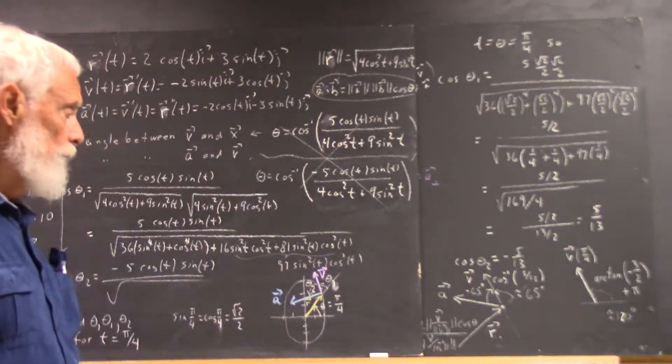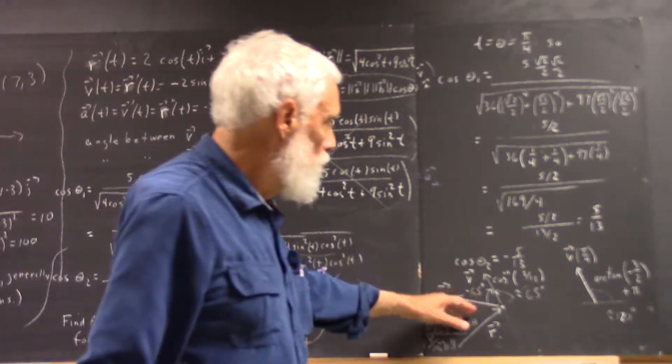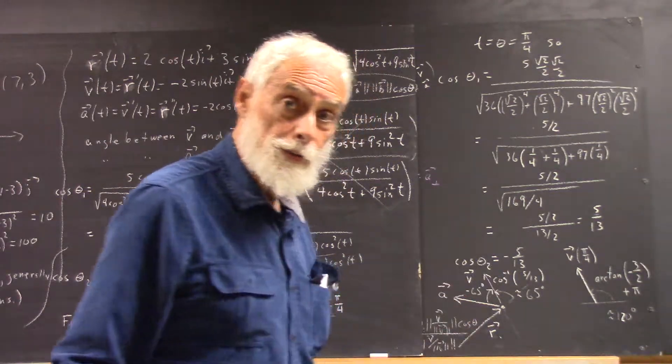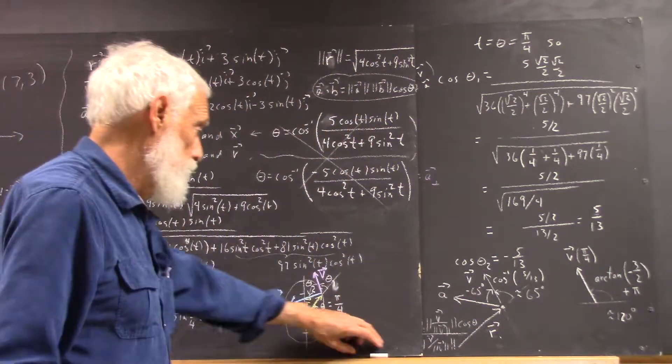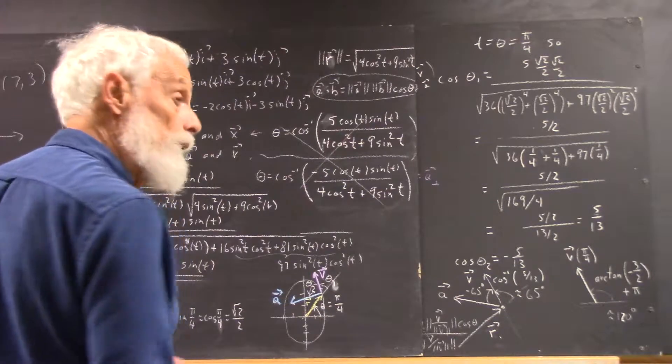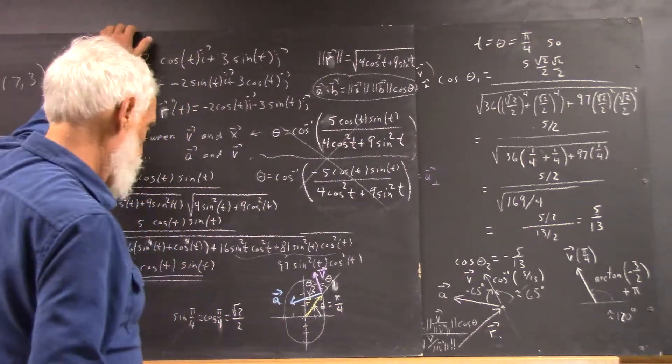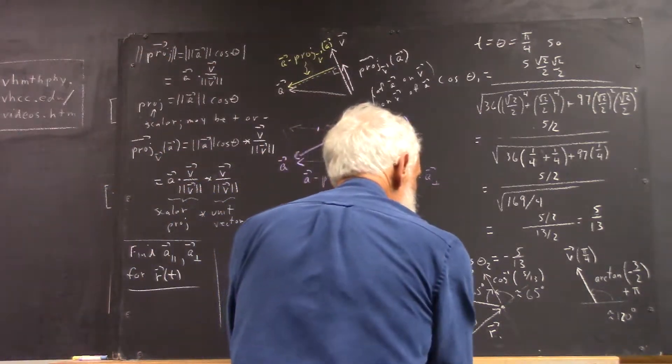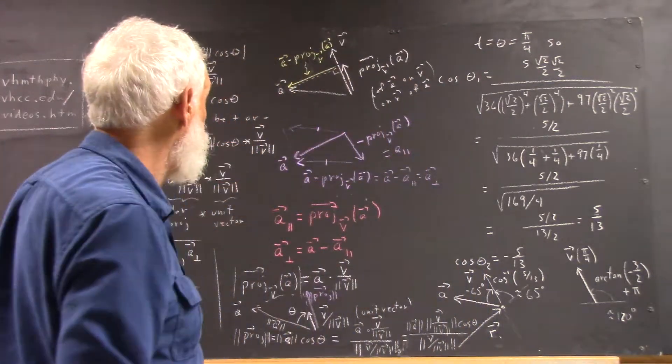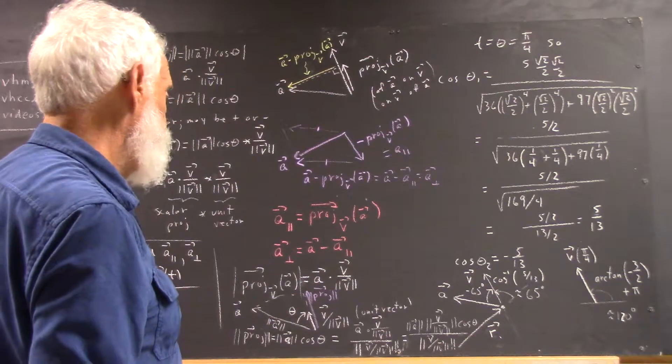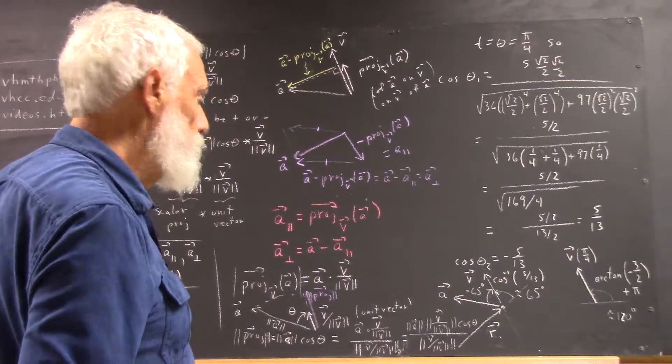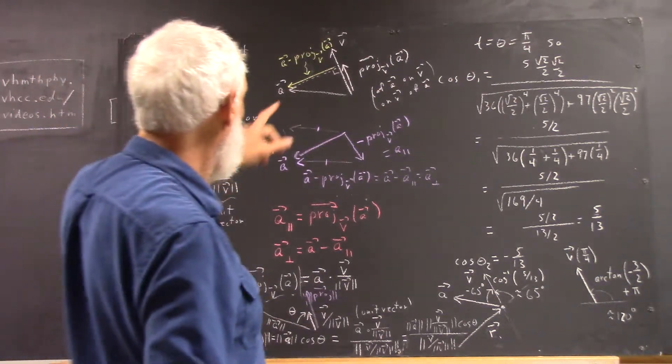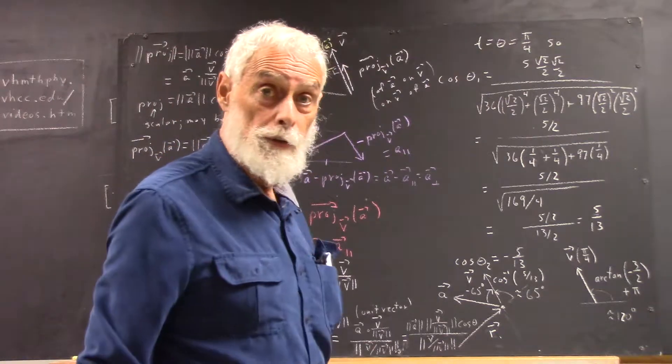And you want to visualize that. You want to visualize what it means to have components of the acceleration vector. And, of course, we're going to learn here in a minute how to calculate those components. Now, in order to calculate those components, we have to be able to do a projection of one vector on another.